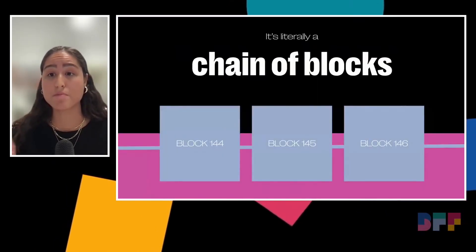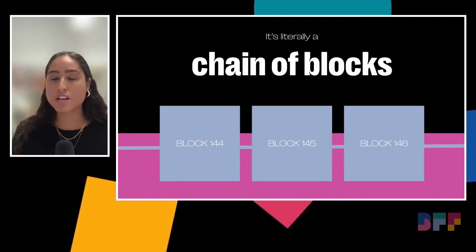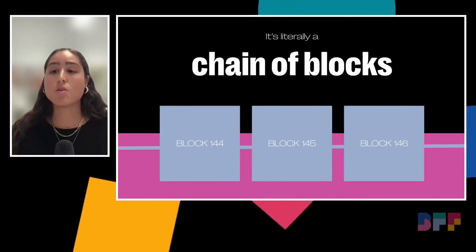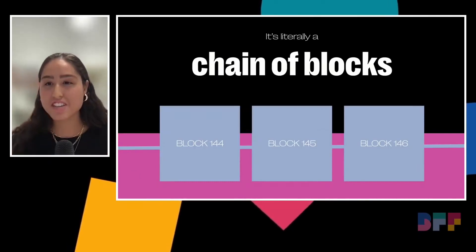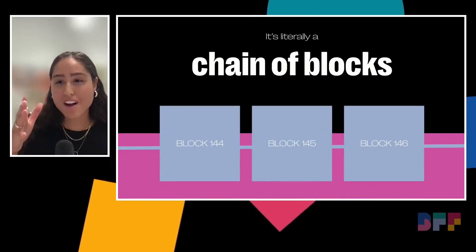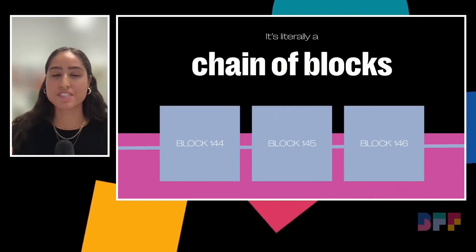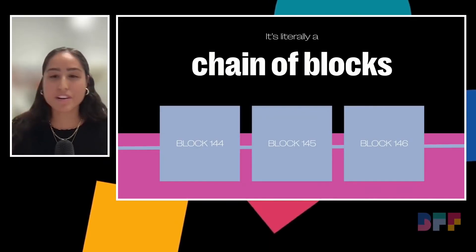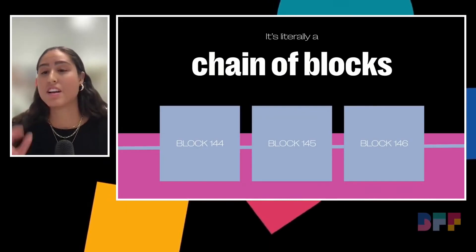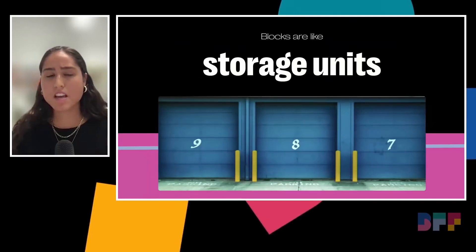So how should you think about blockchain? It's literally a chain of blocks. You can think about it as blocks strung together piece by piece. One number goes up, they're all sequenced in order — that's kind of how you can frame it.